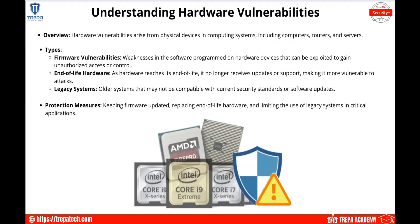Now let's go over hardware vulnerabilities, supply chain vulnerabilities, and some virtualization vulnerabilities. Hardware vulnerabilities arise from physical devices in our computing systems. This can include anything ranging from computers, routers, servers, switches, IoT devices, and embedded systems. When our actual hardware gets exploited, we have firmware vulnerabilities, end-of-life hardware meaning a device can no longer be patched, and legacy systems which may still be supported by the vendor but whose hardware can't keep up with new encryption standards.